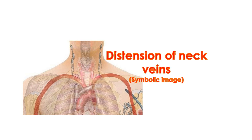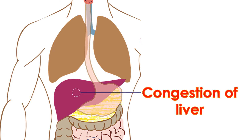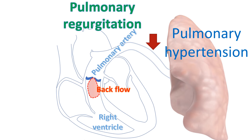Disease of the tricuspid valve increases pressure in the right atrium and in the veins draining blood into the right atrium. When pressure in the veins rises, it manifests as elevated jugular venous pressure and prominent neck veins. A prominent V-wave is seen in the jugular venous pulse with severe tricuspid regurgitation, called venous Corrigan. Increase in back pressure in the inferior vena cava causes congestive hepatomegaly, which can be tender. Peripheral edema in the form of ankle edema occurs in heart failure. Ascites may occur in advanced tricuspid valve disease.